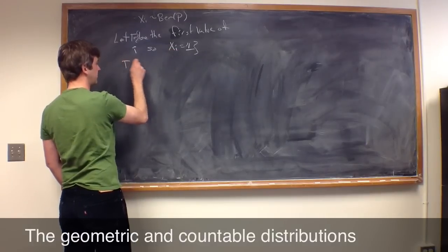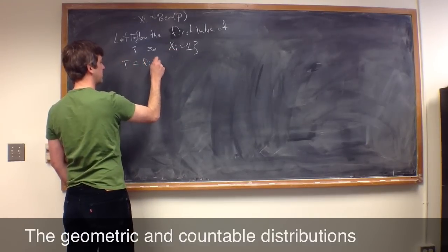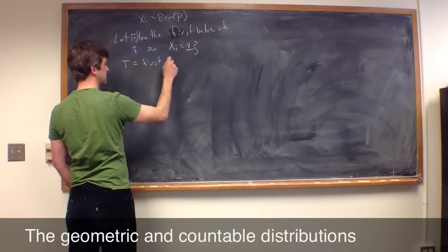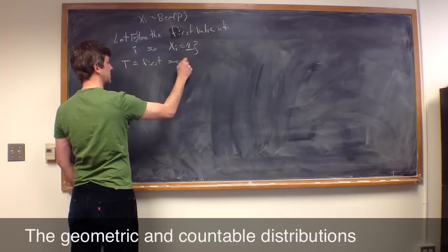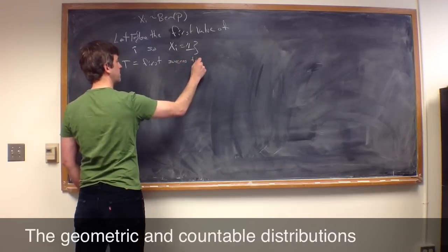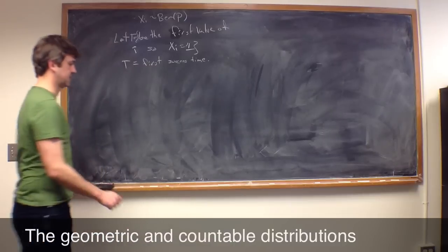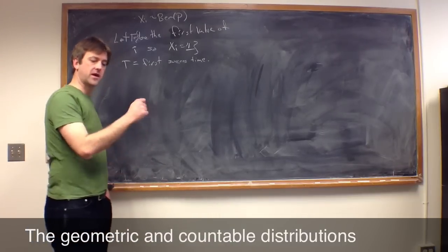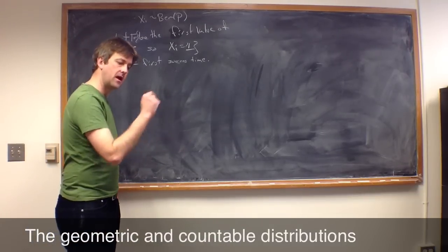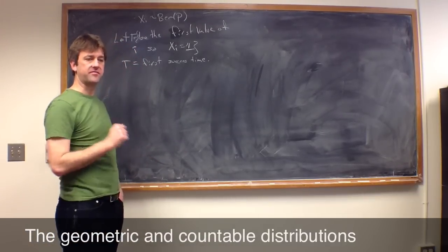In other words, t is equal to the first success, or the time of the first success. So we're flipping a coin that comes up heads with probability p, and we ask how long do I have to wait for the first time I get a head?